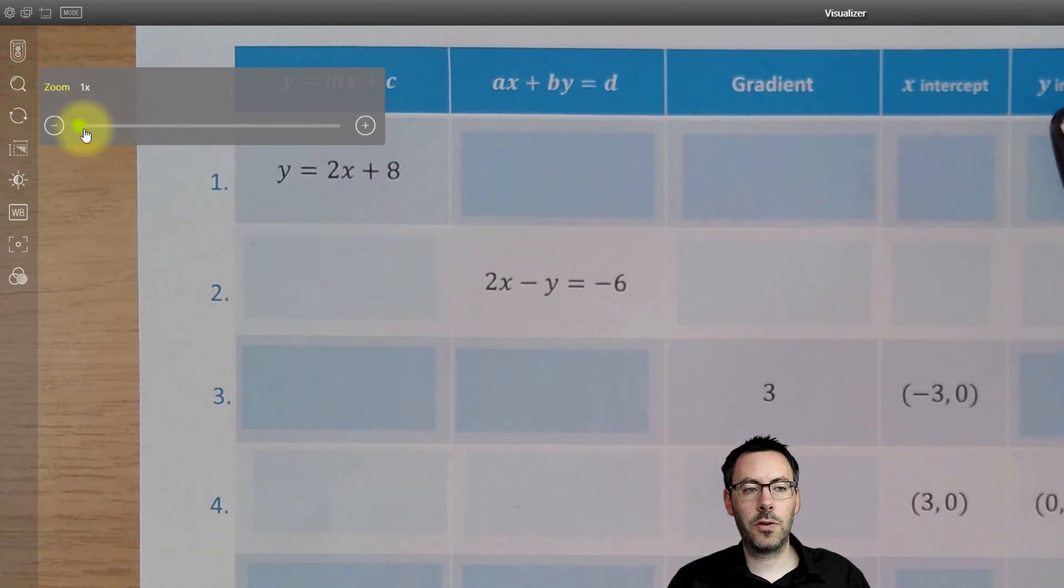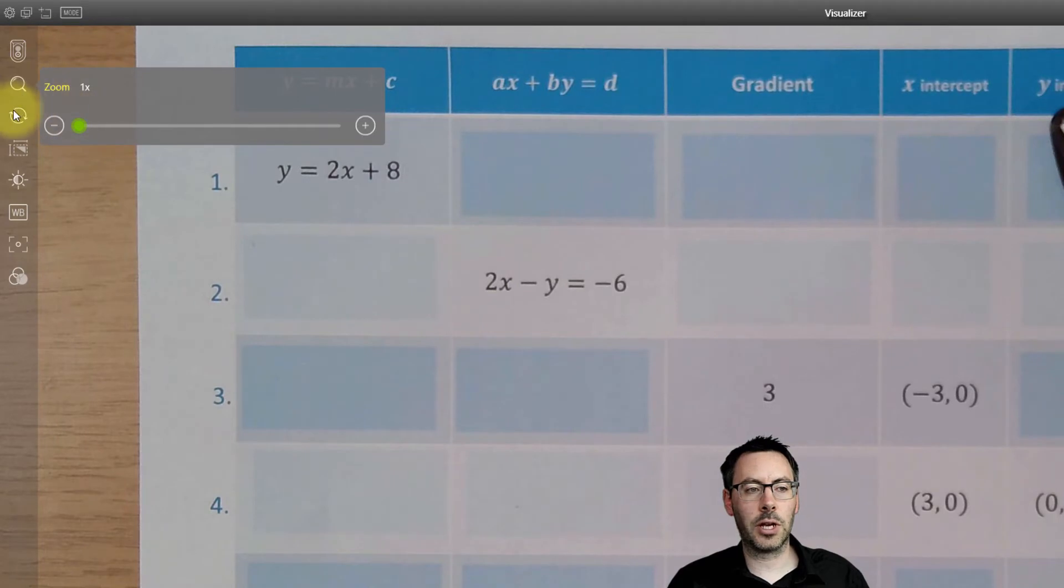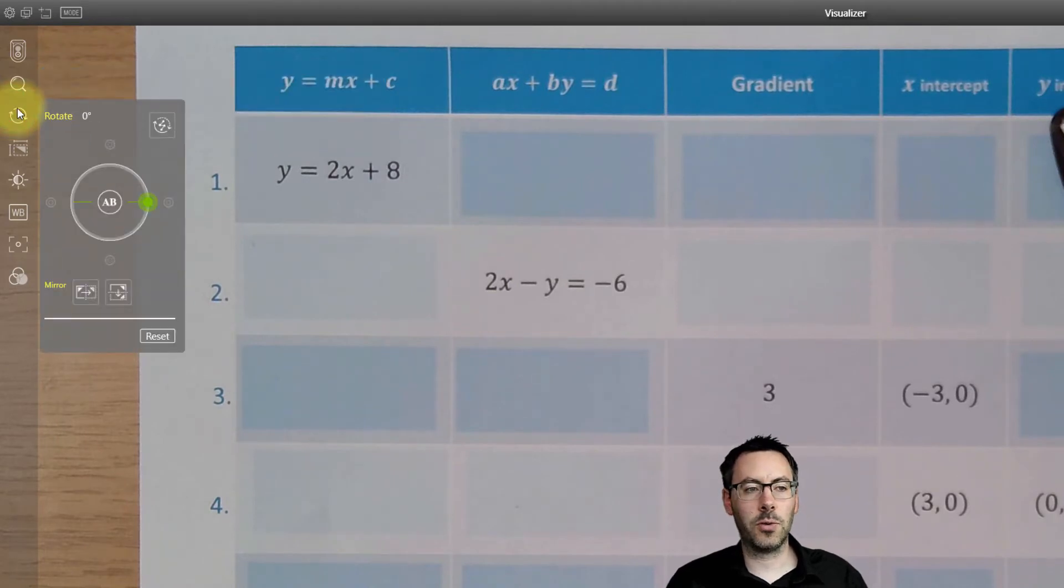Then we've got the zoom button, which zooms in nicely. This is a digital zoom, not an optical zoom, but really useful if you're doing something like a science experiment and wanted to show detail.